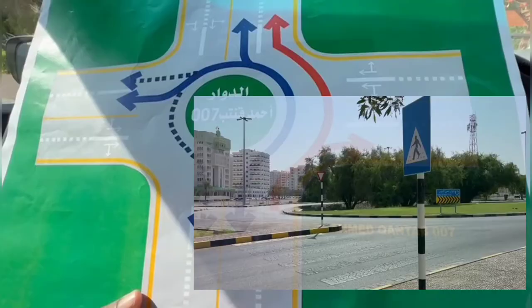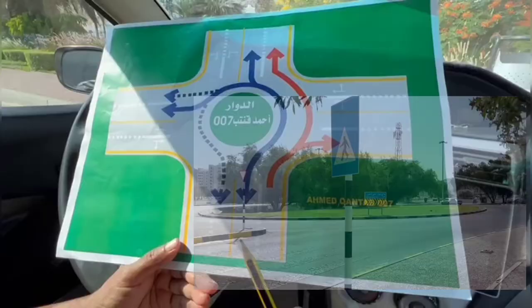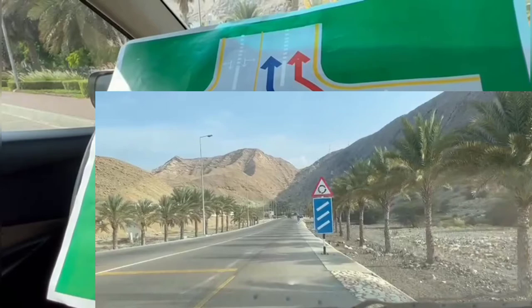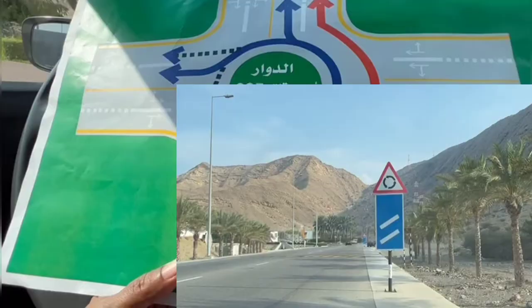Today we are going to talk about driving in a roundabout. Suppose you are going for a test — how will you know that you are nearing a roundabout? There will be 100, 200, and 300 meter indicators and a roundabout signal. The 300, 200, and 100 indicators are for reducing your speed. You should be in the right line.